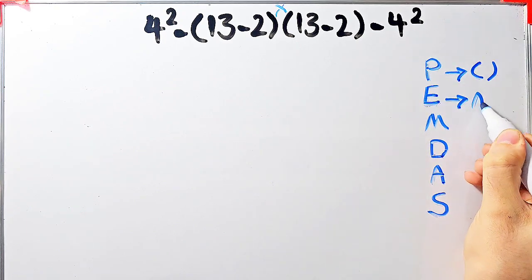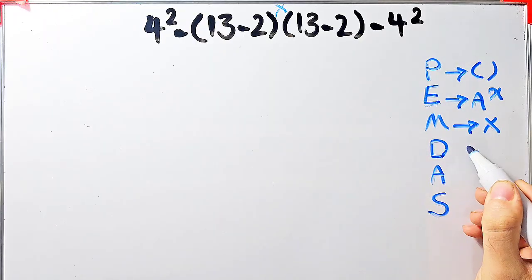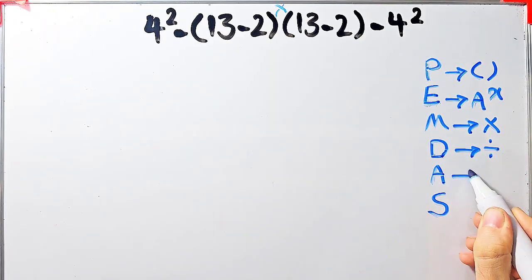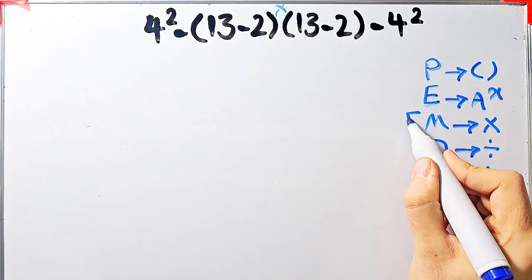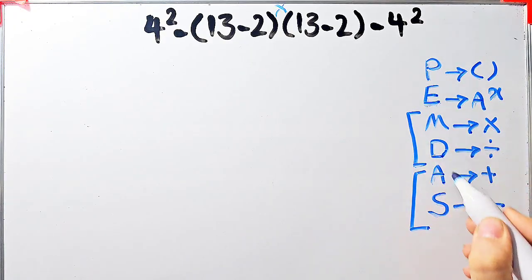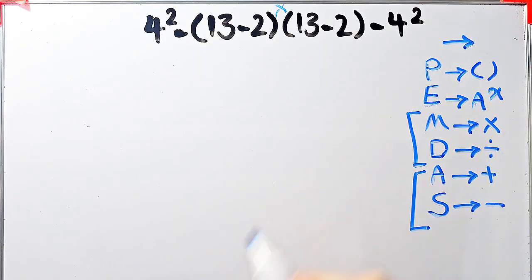M stands for multiplication, D stands for division, A stands for addition, and S stands for subtraction. Multiplication and division have the same level of priority; also addition and subtraction have the same level of priority. When we have both in an expression, we start from the left and simplify.